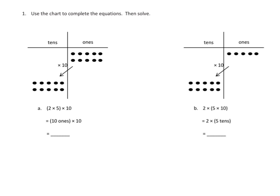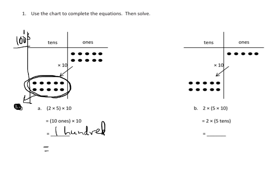So mathematically, 2 rows of 5 times by 10 means you're going to have these 10 ones now in the tens column. And 10 ones times 10 means we have to squeeze that into the hundreds column. So 10 ones times 10 equals 100.